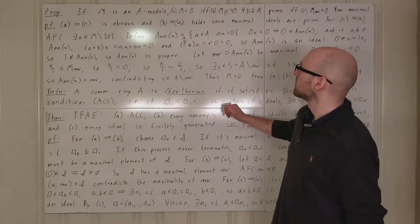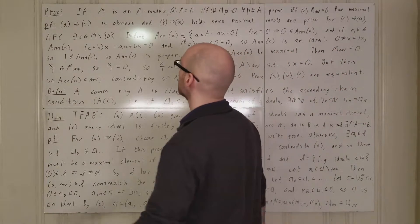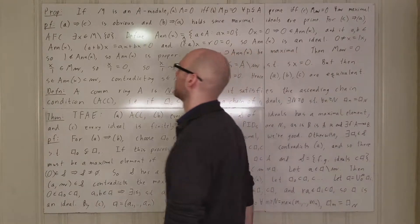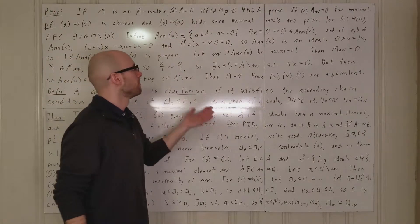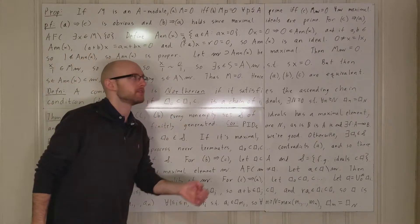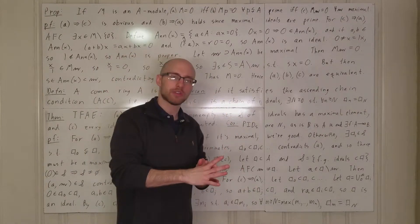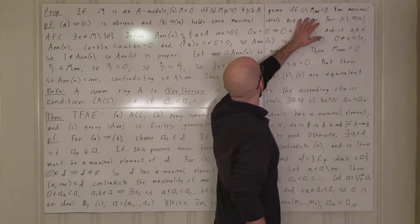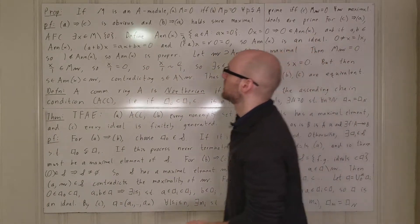Let's say a few more things about modules and then move on to Noetherian rings. If M is an A-module — where A is a commutative ring — then these three things are equivalent: M equals zero; localizing at p gives you the zero module for every proper prime ideal; and the same thing but considering maximal ideals instead of proper prime ideals.